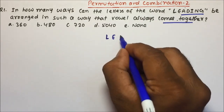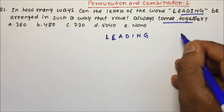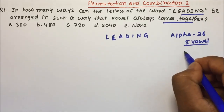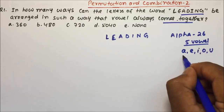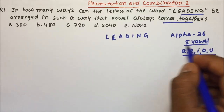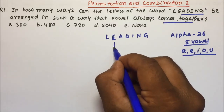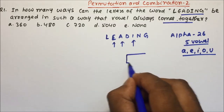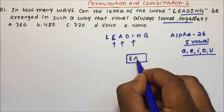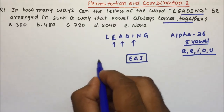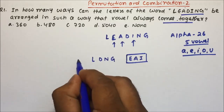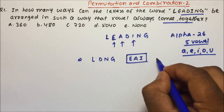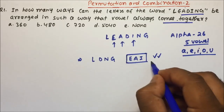We have the word L-E-A-D-I-N-G. As we know, in the alphabet we have 26 letters, of which 5 are vowels: A, E, I, O, and U. In LEADING, we have 3 vowels: E, A, I. The condition in the question is that the vowels should always come together — that means E, A, I should always come together. Now, if you want all the vowels to be together, put all the vowels inside a box.